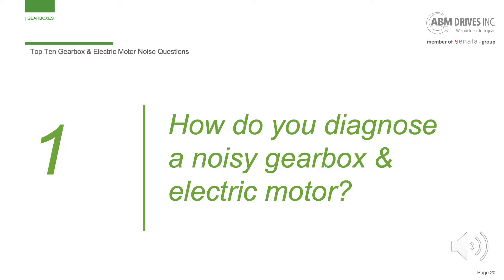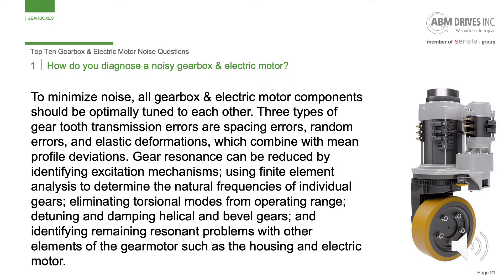And the number 1 top 10 gearbox and electric motor noise question is: How do you diagnose a noisy gearbox and electric motor? To minimize noise, all gearbox and electric motor components should be optimally tuned to each other. Three types of gear tooth transmission errors are spacing errors, random errors, and elastic deformations, which combine with mean profile deviations. Gear resonance can be reduced by identifying excitation mechanisms using finite element analysis to determine the natural frequencies of individual gears, eliminating torsional modes from the operating range, detuning and damping helical and bevel gears, and identifying remaining resonance problems with other elements of the gear motor such as the housing and electric motor.